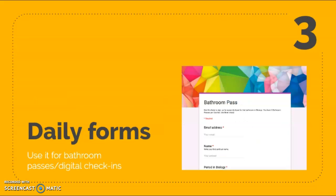This is the bathroom pass — students can access it through a short URL, which I'll talk about in my next tip. They enter their name, email address, and period, then ask my permission before hitting submit. That way I have a timestamp for when they filled it out. I know how long they're gone, and they know they have three passes per quarter. I can see on the backend who has used how many passes, and I can reset and clear the data at the end of the quarter.